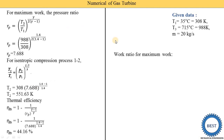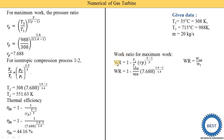Now we find the work ratio for maximum work. The equation is: WR = 1 − (T1 / T3) * RP ^ ((gamma − 1) / gamma). You can also use: WR = net work / turbine work — both equations give the same answer. Substituting T1 = 308, T3 = 988, RP = 7.688, and gamma = 1.4, we get work ratio = 0.44. It is unitless since it is a ratio of two work quantities.